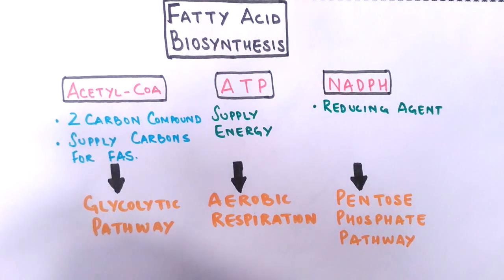Although malate dehydrogenase also produces NADPH from the reaction of oxaloacetate to malate to pyruvate, the pentose phosphate pathway is the primary source of NADPH.